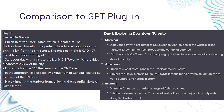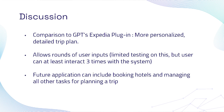Here's a comparison to the GPT Expedia plugin. On the left is our system-generated plan and on the right is the GPT plugin's output. Our plan combines the hotel and activities for each day and creates a more detailed plan. The GPT plugin sometimes only returns activities or just hotel information with no relevance to each other. Our generated plan is a lot more personalized and detailed.